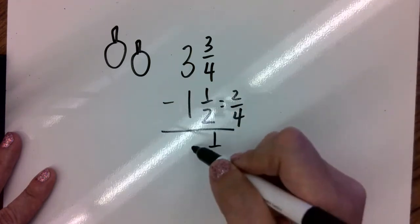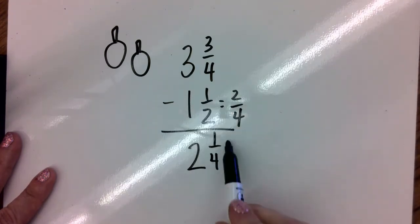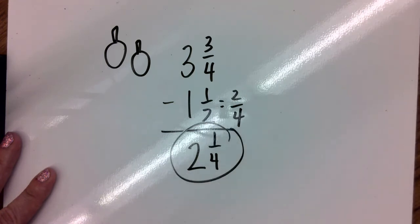Three minus one is two. So her pumpkin is two and one-fourth.